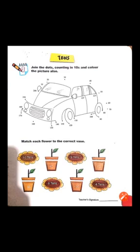Prep class, آپ نے pencil کو چھوڑنا نہیں ہے۔ 30 کے بعد آپ نے jump کرنا ہے 40 پر۔ 40 کے بعد آپ نے 10 numbers کا jump کرنا ہے اور آنا ہے 50 پر۔ Then jump from 50 to 60, then 60 to 70. 70 کے بعد آتا ہے 80. Then from 80 to 90, and 90 to 100.